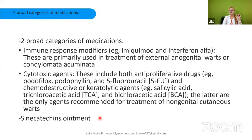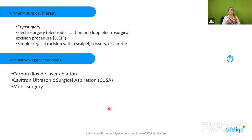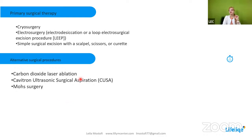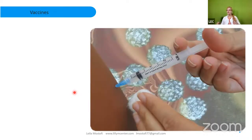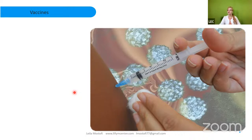There is also sinecatechins ointment that will be very helpful. Additionally, there are other treatments — primary surgical therapy like cryosurgery, electrosurgery, LEEP, simple surgical excision with scalpel, scissors, or curette. Alternative surgical options include carbon dioxide laser ablation, CUSA (cavitron ultrasonic surgical aspiration), and Mohs surgery. Most importantly, vaccination is the most important and helpful preventive measure to reduce cancer-related problems with HPV and reduce its contagiousness.